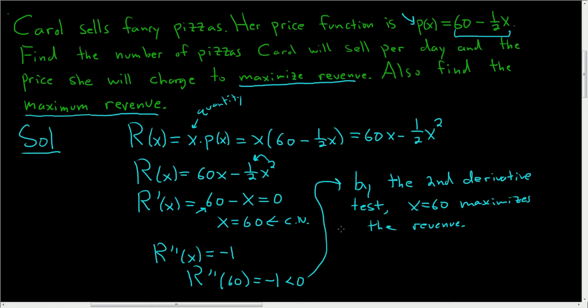So if she sells 60 fancy pizzas a day, she's going to maximize her revenue. Find the number of pizzas Carol will sell per day. The answer to that is 60 pizzas.